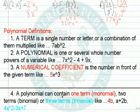A polynomial can contain one term, called a monomial, two terms, a binomial, or three terms, a trinomial. So 4b would be a monomial, since there's one term. a plus 2b, there are two terms, so that would be a binomial. And 4x squared minus 3x plus 7 would be a trinomial.